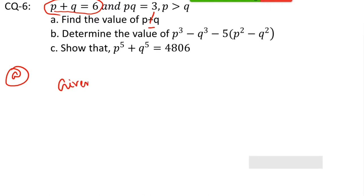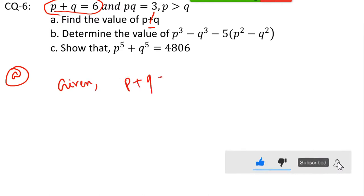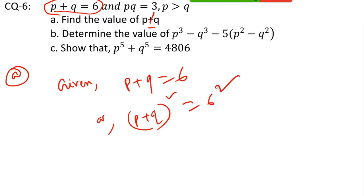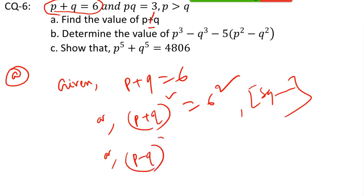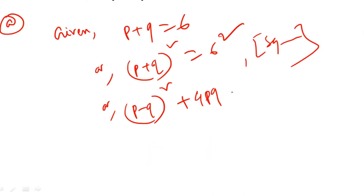So how can we get the value of P minus Q? You will write P plus Q equals 6, then P plus Q whole square equals 6 squared — squaring both sides. Or P plus Q whole square can be written as P minus Q whole square plus 4PQ. That is the formula we got earlier, equals 36.